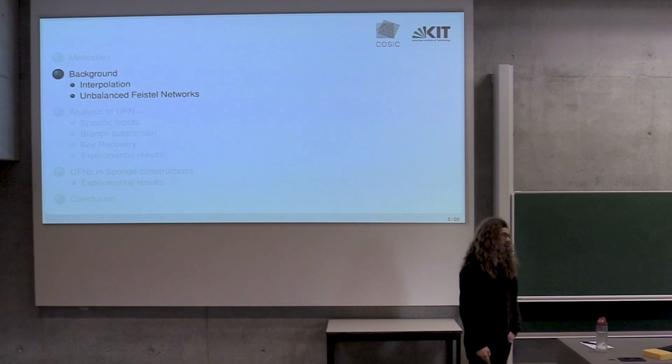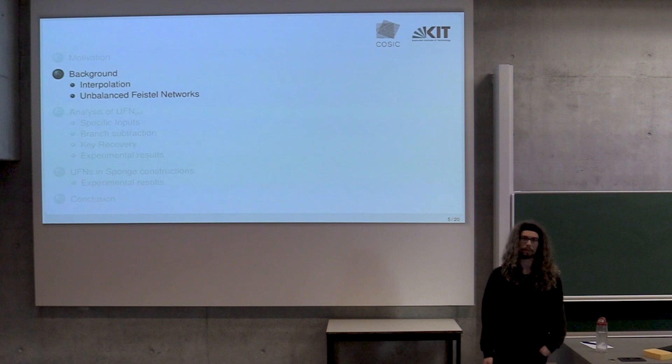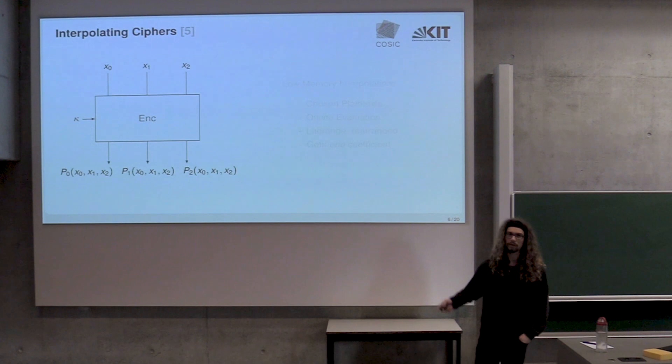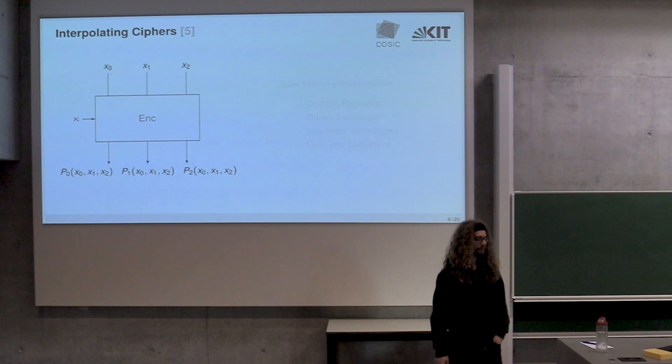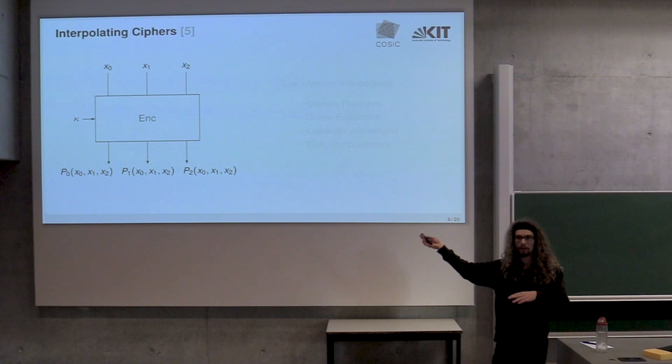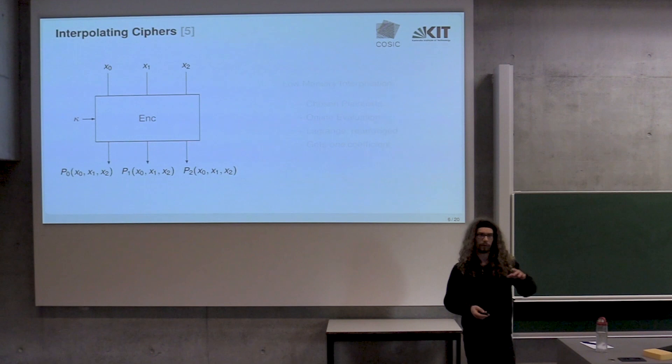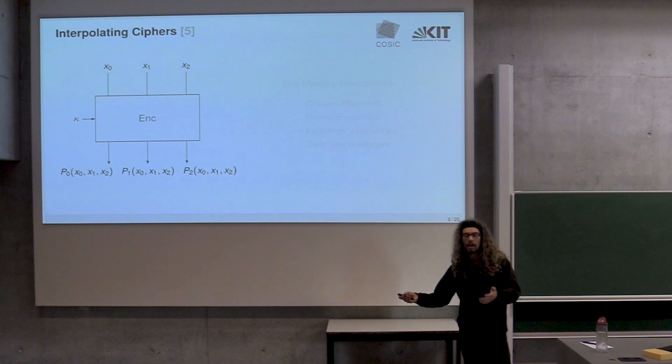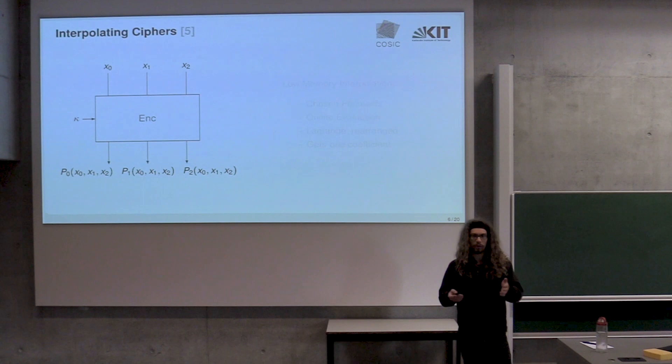Let's talk about what it means to interpolate a block cipher. This is just any generic block cipher, non-specified. There's kappa up there, a key that we don't know. It has three inputs and three outputs. The cipher works on a finite field, actually on a prime field. Each of these inputs is a prime field element. We can see these as variables and the outputs as polynomials in these variables.